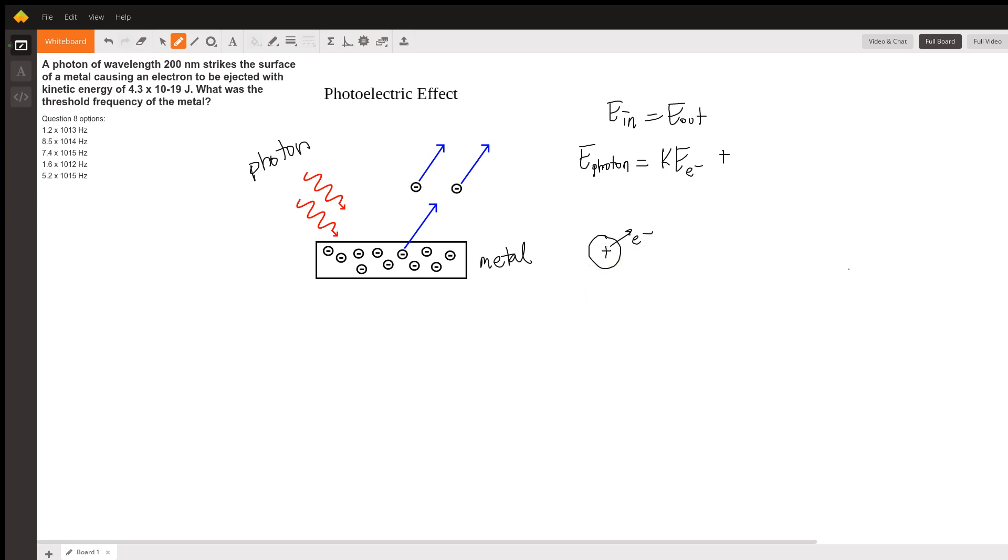That's the ionization energy of that particular metal. We can also call that psi, the work function, which is the technical term in the context of the photoelectric effect—the energy we need to kick that electron off. It's a simple conservation of energy, so once we've got that down, this one's pretty easy to solve.